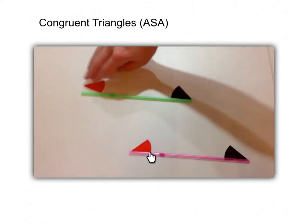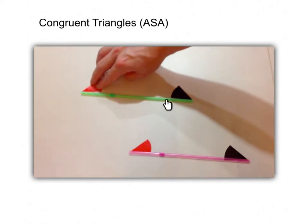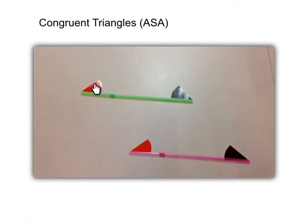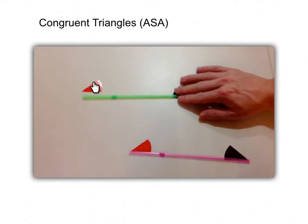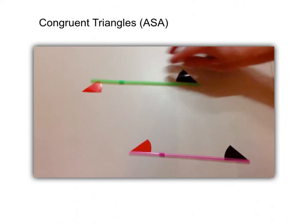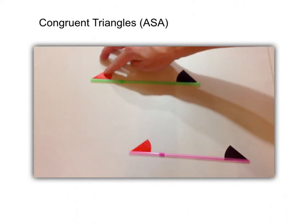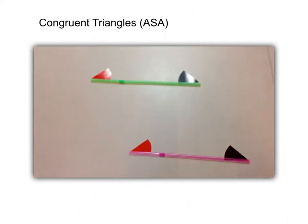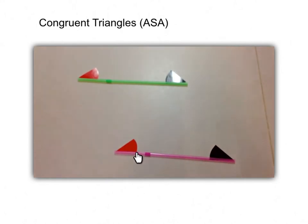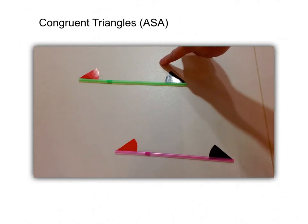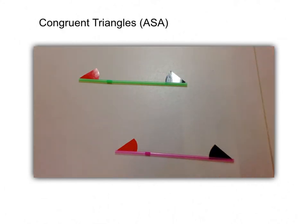This will be the pair of equal sides, equal corresponding sides. And this will be the second pair of equal angles. And look at the order of the letter ASA is very important because the pair of equal sides should lie between the two pairs of equal angles.